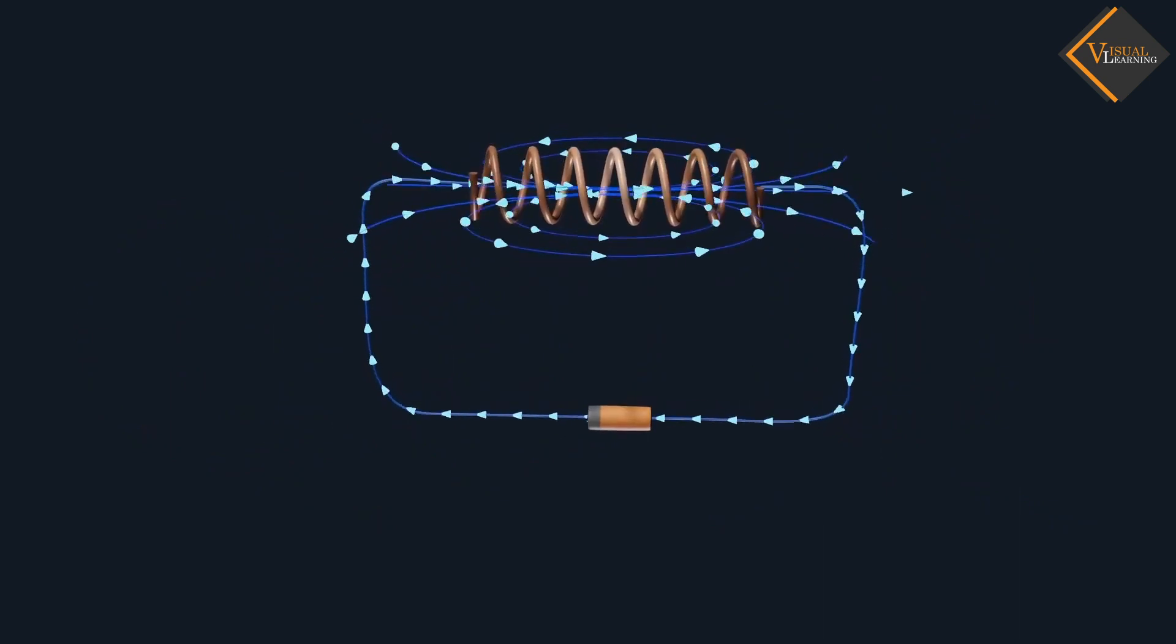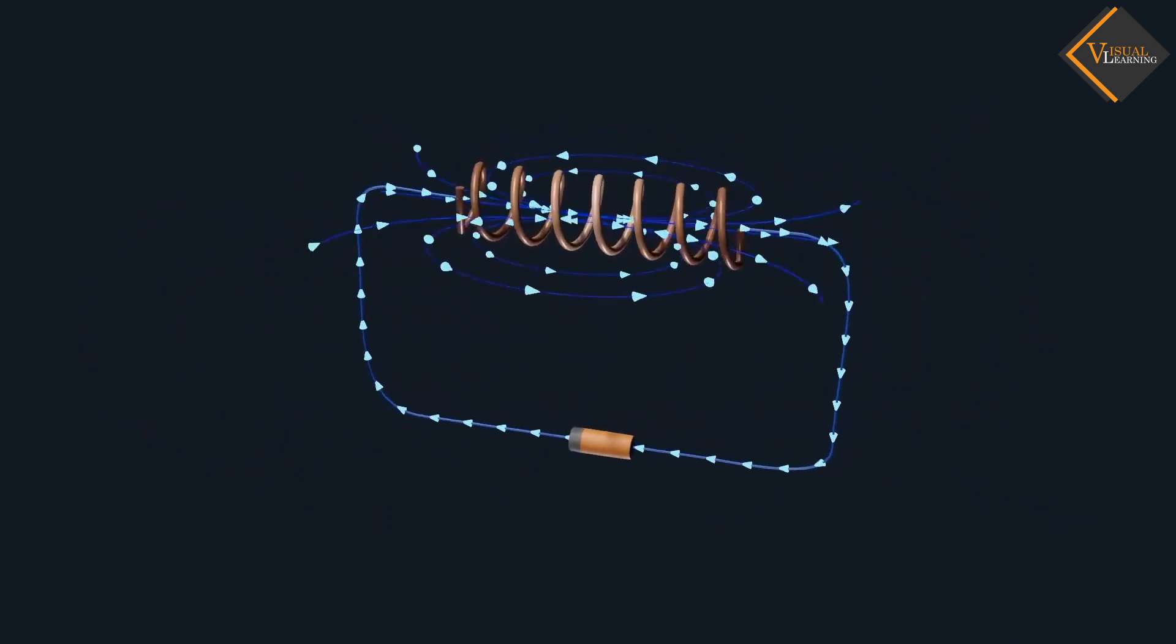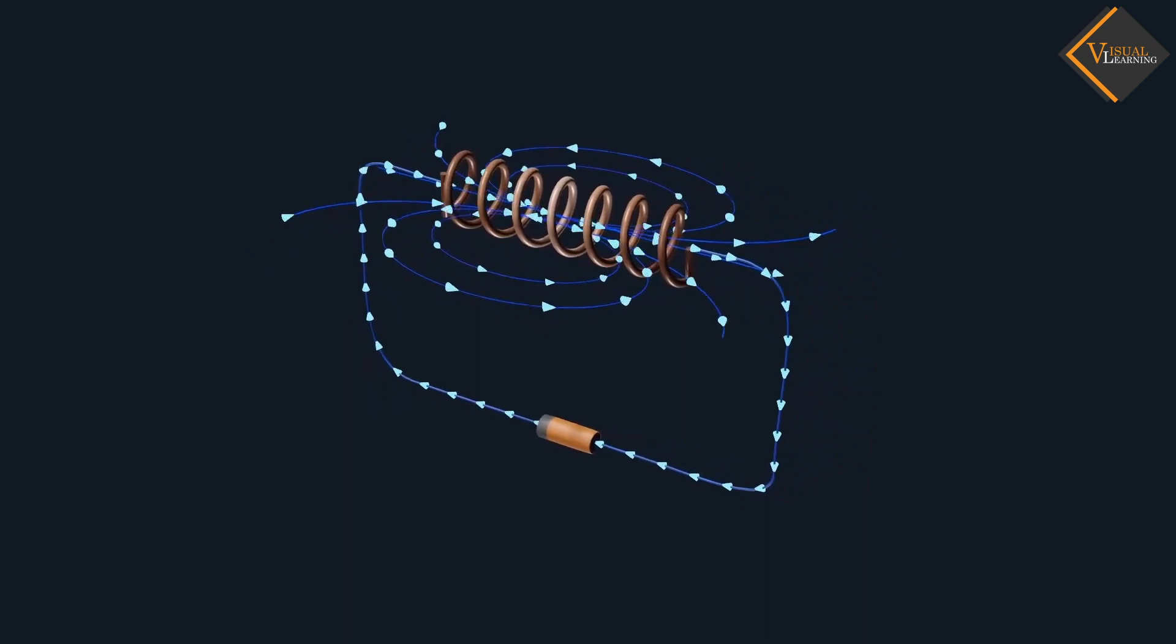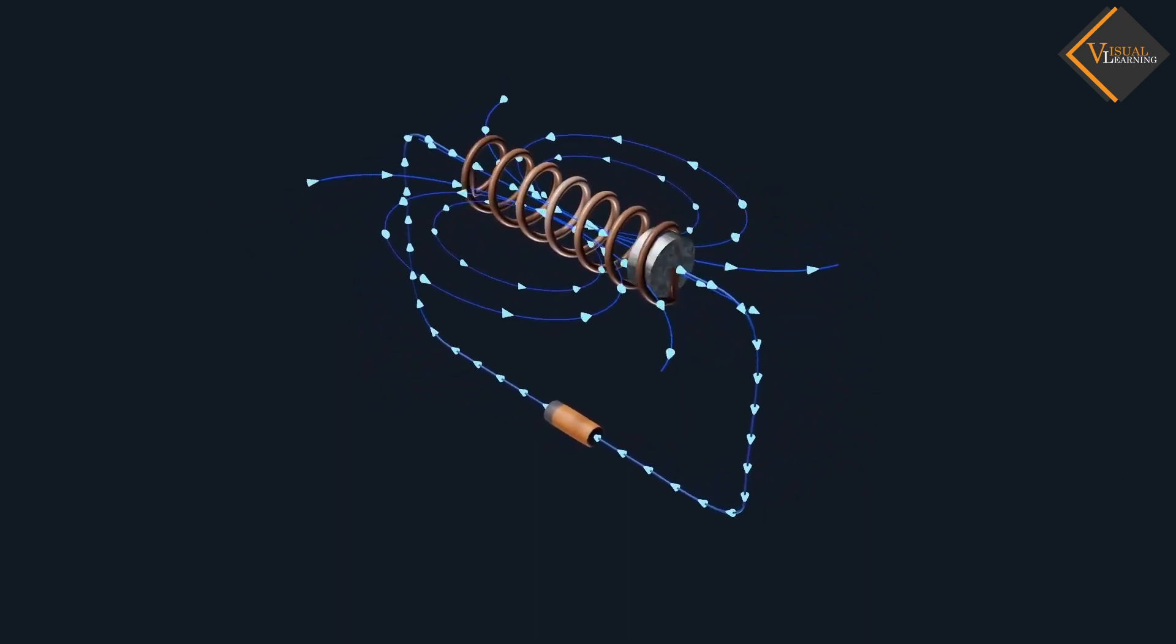Now, if we want to produce strong magnetic field by using solenoid, we use soft iron rod inside the solenoid.